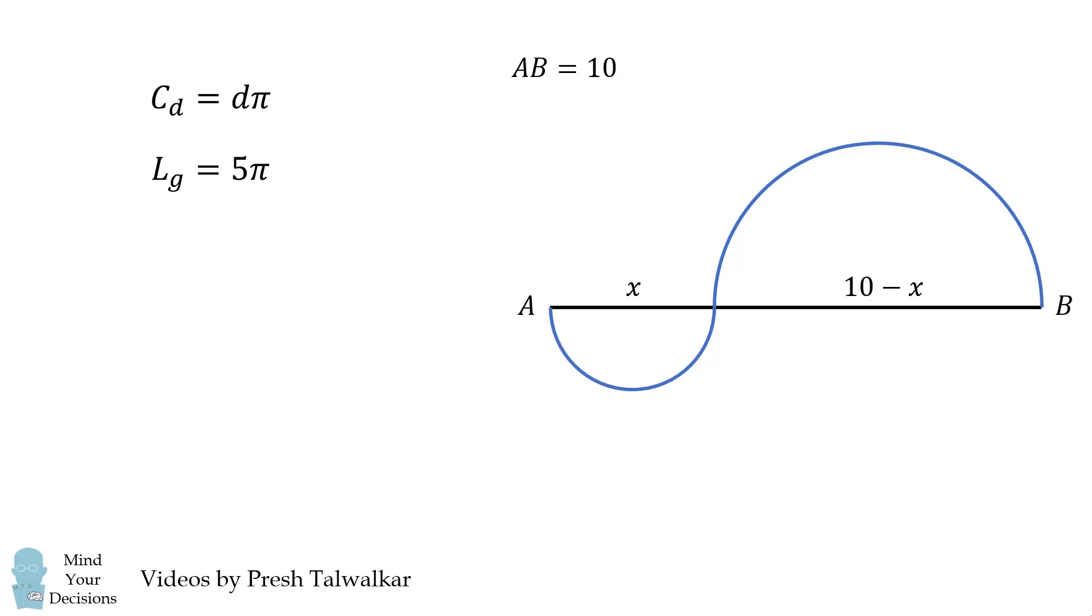Because AB is equal to 10, the length of the blue curve is equal to half the circumference of a circle with the diameter of x and half the circumference of a circle with the diameter of 10 minus x. We substitute in those values and then simplify. Notice the 0.5πx terms cancel out. So the length of the blue curve is equal to 5π.